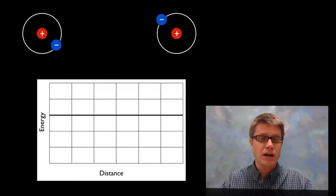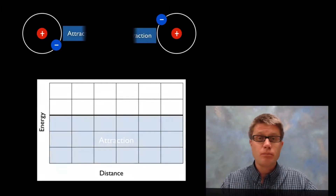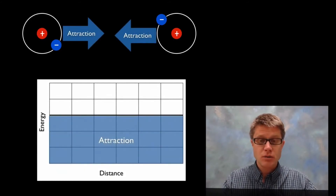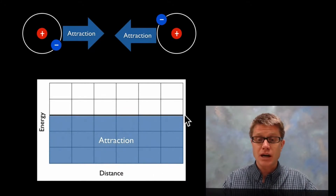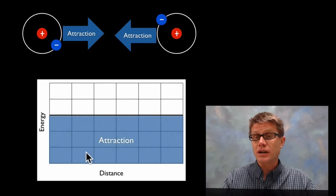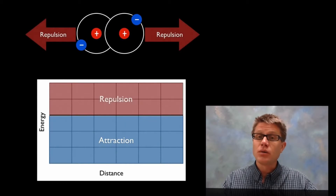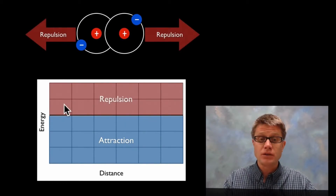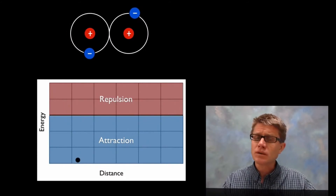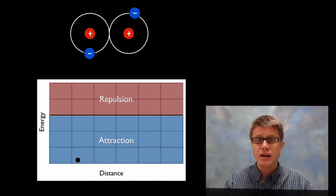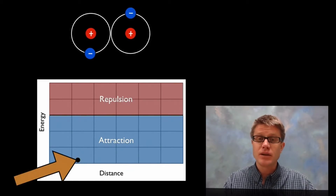If we look at these two representative atoms, as we bring them close together there's going to be attraction. In other words, as we shorten the distance between the atoms and they get closer and closer together, there's going to be a greater attractive force. Now as they start to get really close together, there's actually going to be repulsion that pushes them apart. So we can find what's called that Goldilocks point — where they're not too close, not too far away.